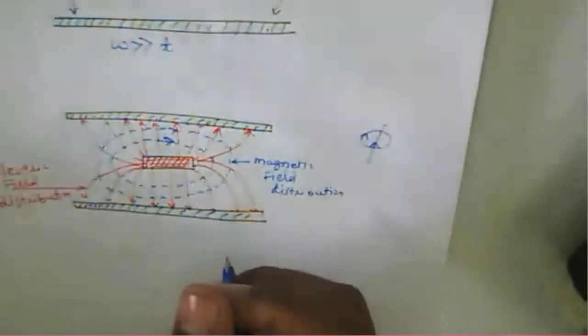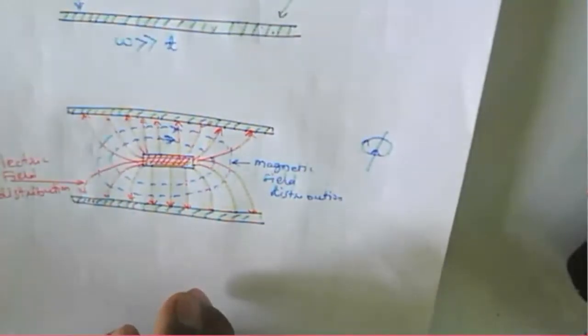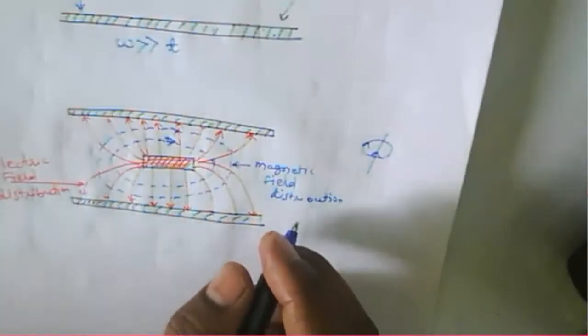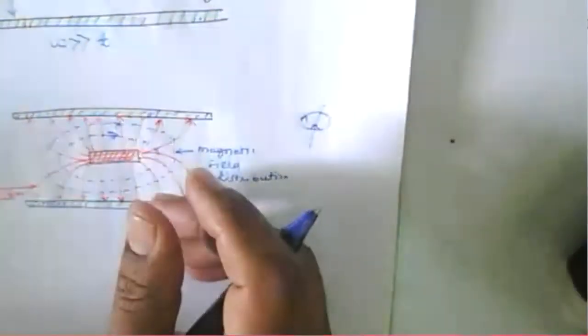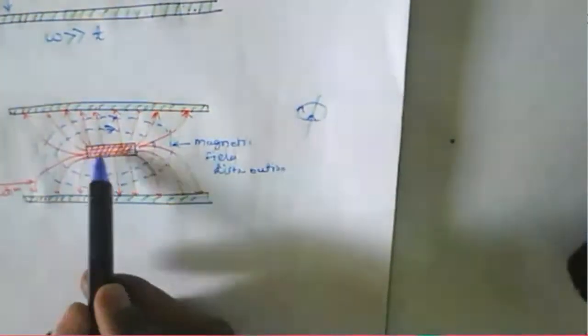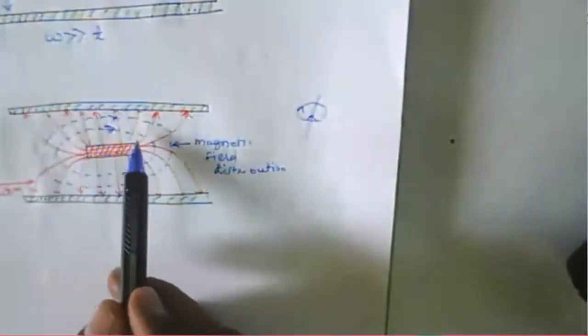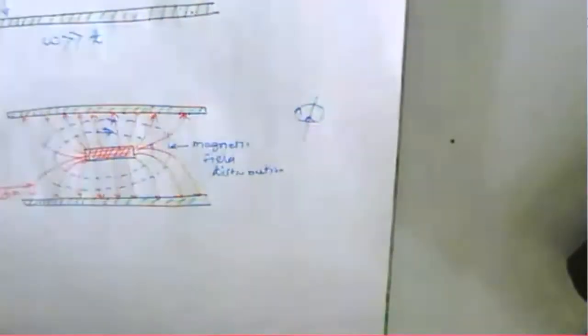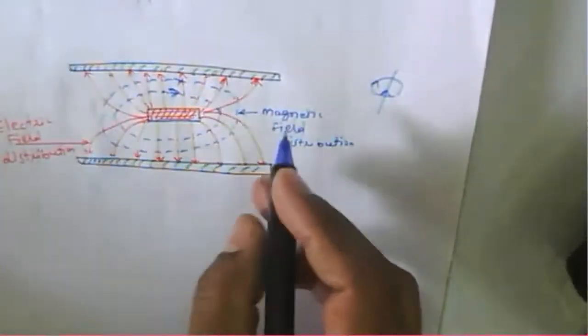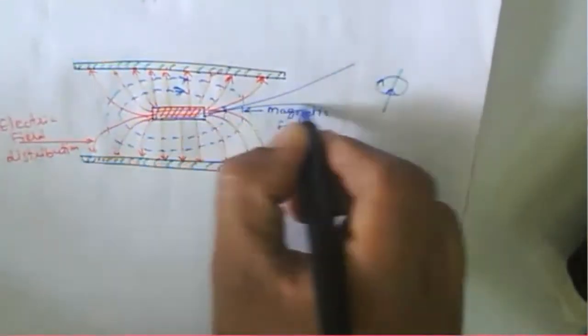In between the two ground planes there is a dielectric material, which can be any suitable substrate. In labs, PCBs use FR4 material, which has a dielectric constant of approximately 4.4. Other materials like Teflon or polystyrene can also be used as dielectric substrates. The circuit line is designed and embedded in whatever dielectric material is chosen.